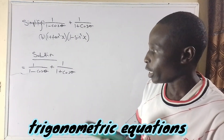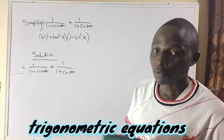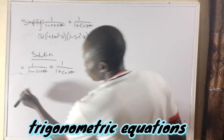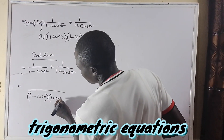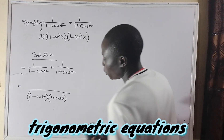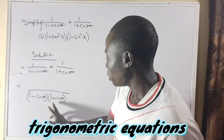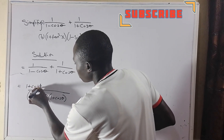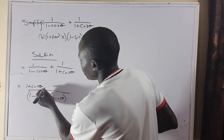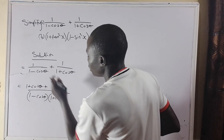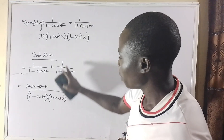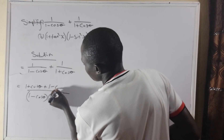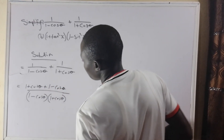Taking us back to our knowledge of simplification, we know that 1 minus cos theta and 1 plus cos theta form our LCM. So we take them all as our LCM. This will go with this, leaving this. This times 1 is still 1 plus cos theta. Then I have positive — this will go with this, leaving 1 minus cos theta, and this times 1 is still 1 minus cos theta.